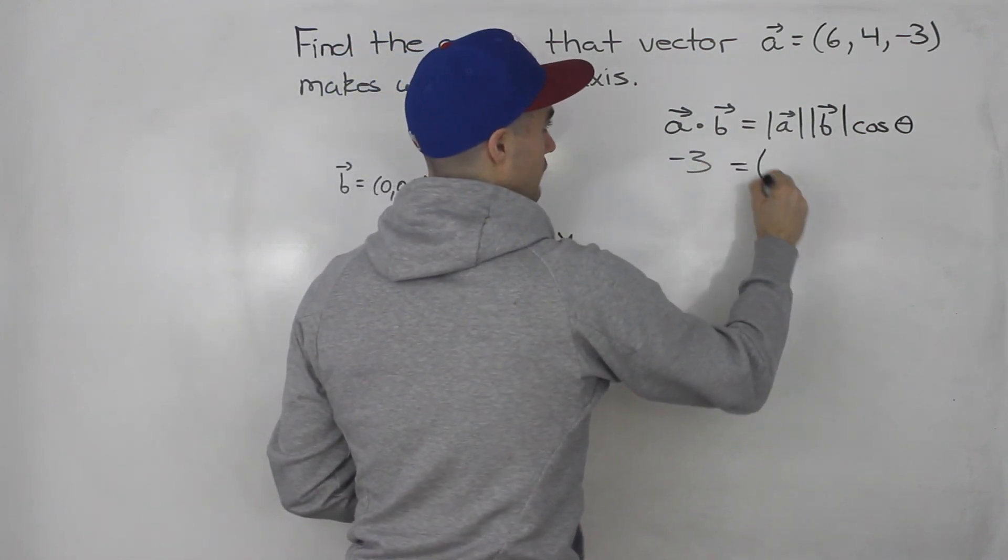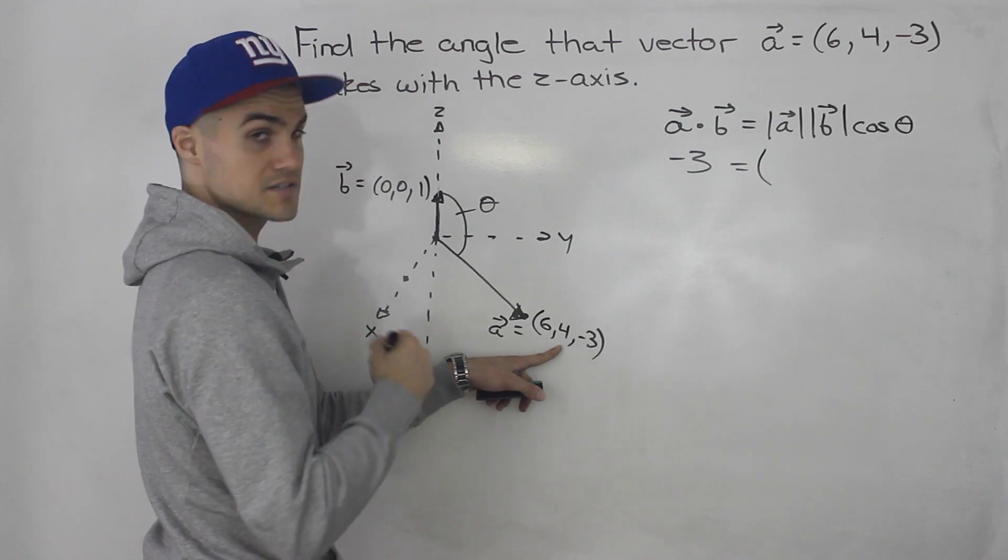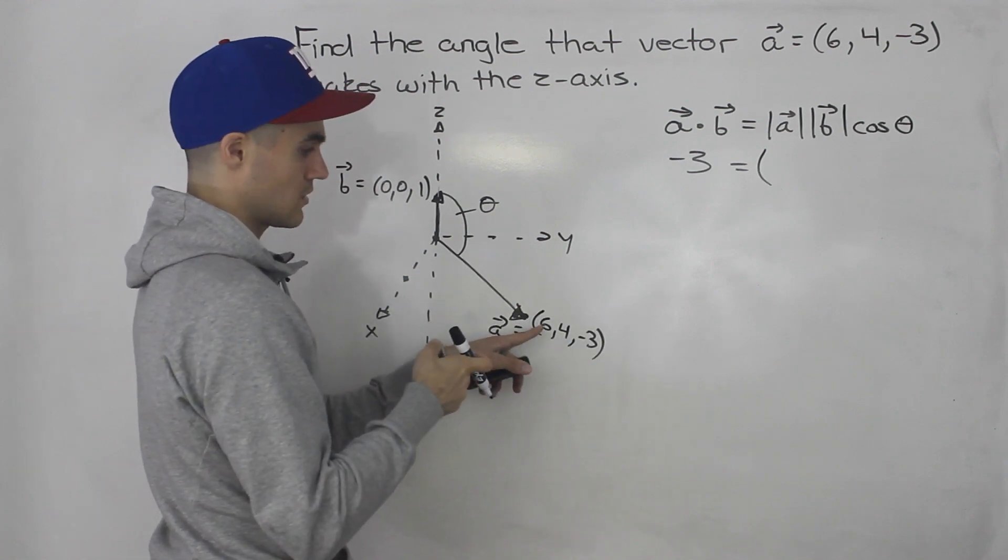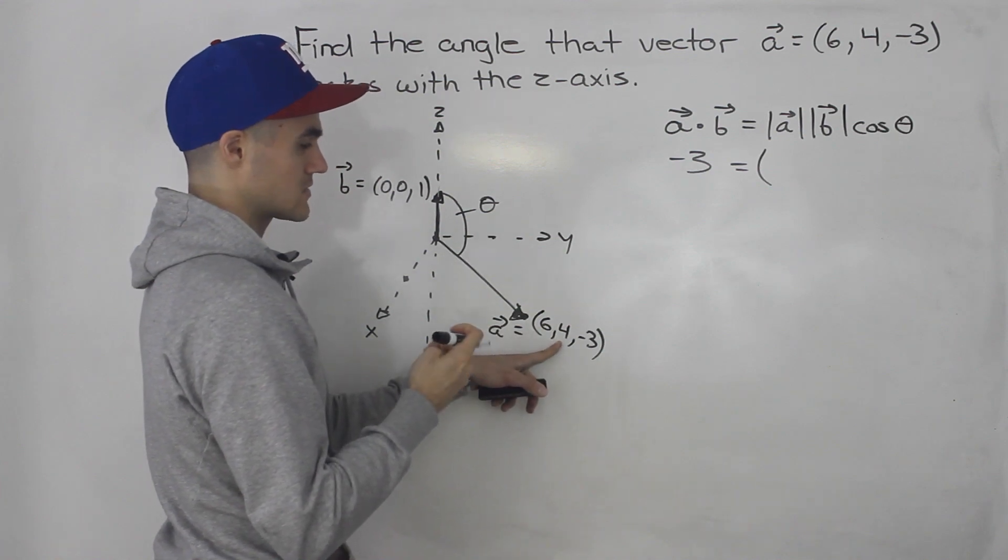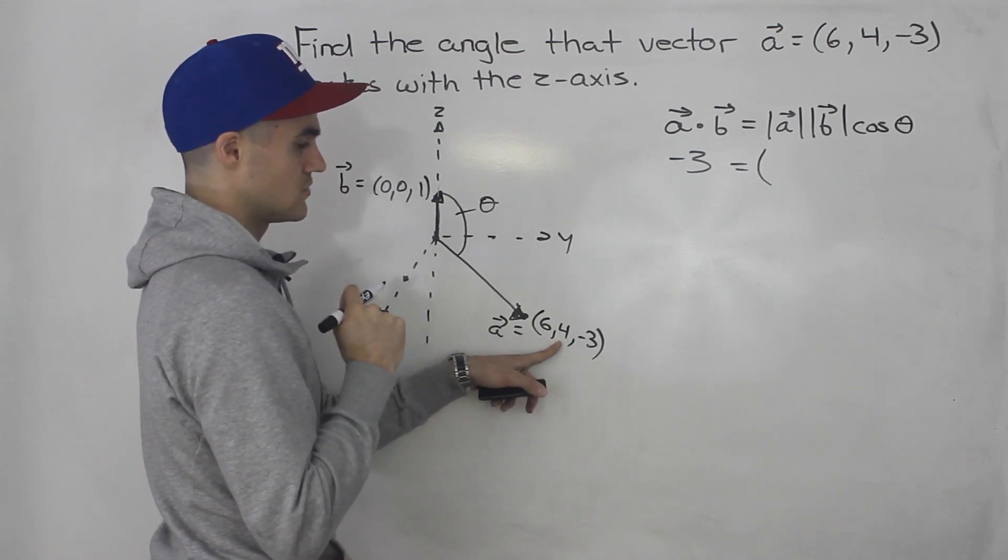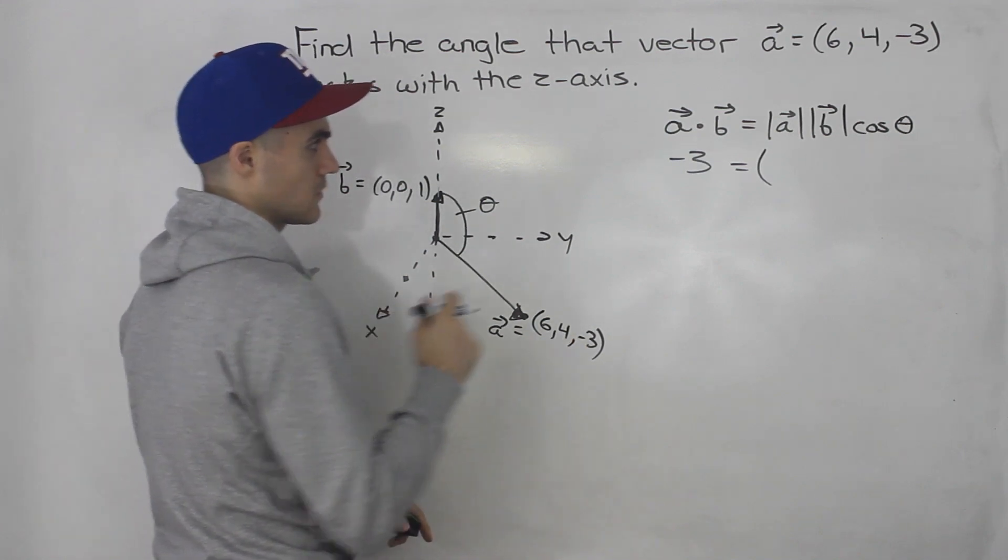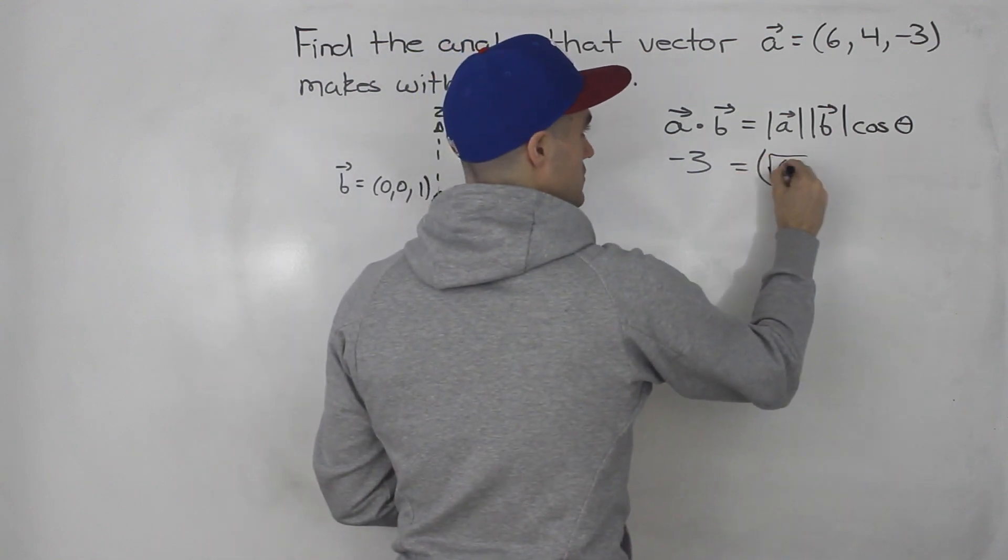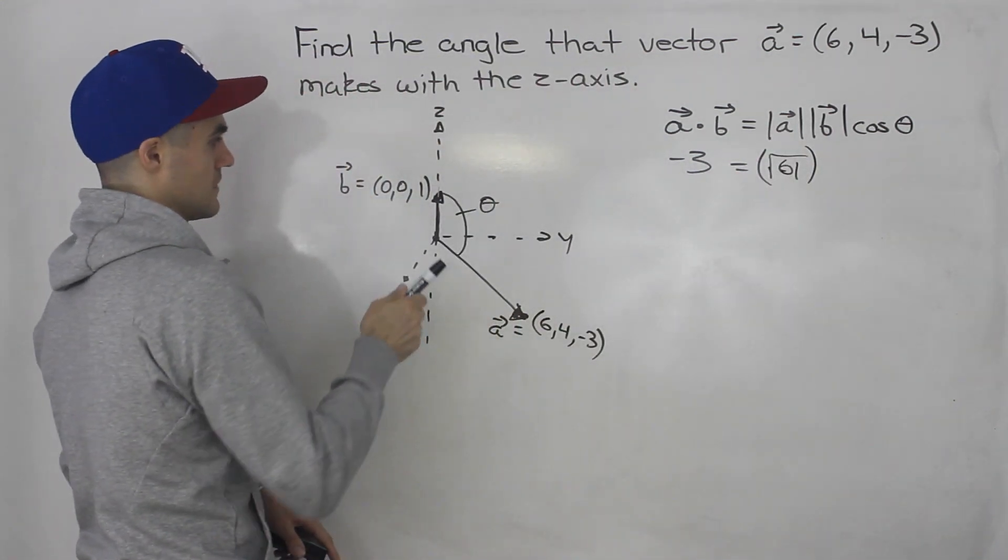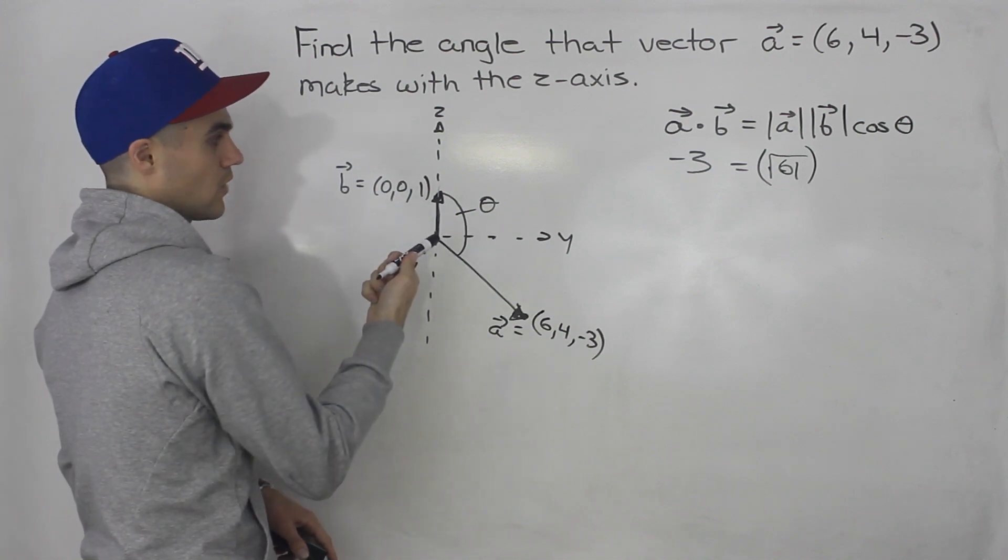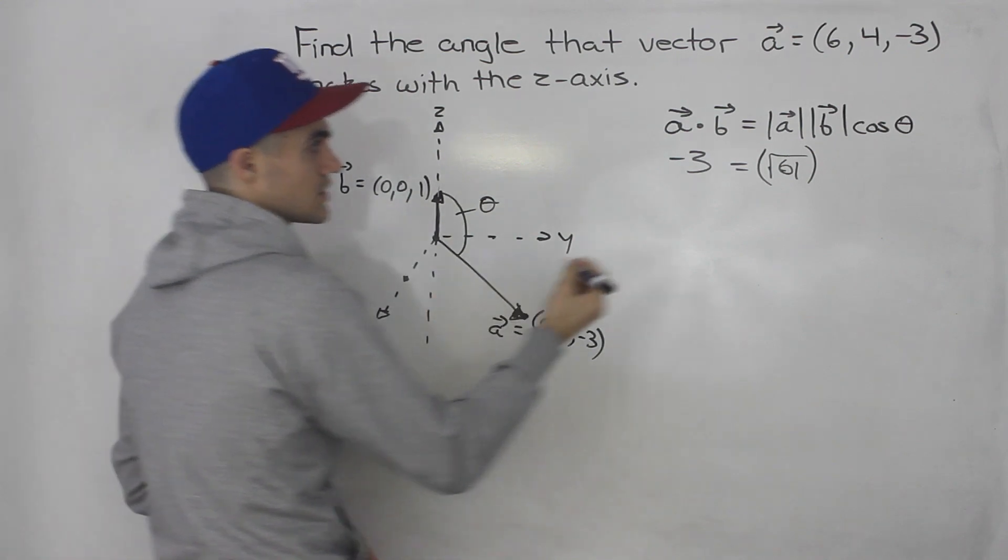Magnitude of a is going to be all of these squared summed up and then square rooted. So 6 squared plus 4 squared, that's 36 plus 16. That gives us what? 52. And then plus 9, that would give us 61. So square root of 61 is the magnitude of a. Magnitude of b is simply just 1, right? You'll end up with the square root of 1 squared, which is just 1.